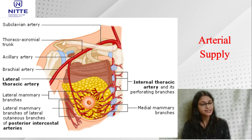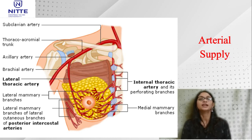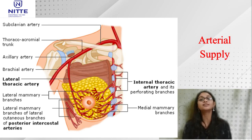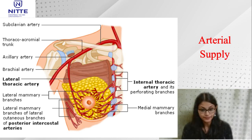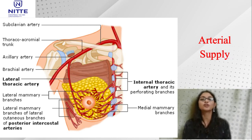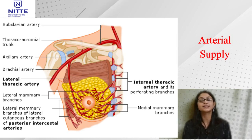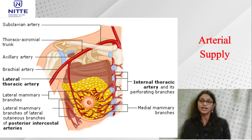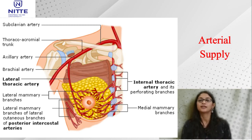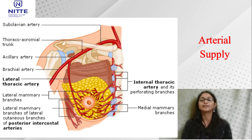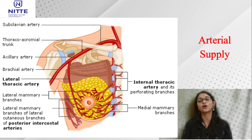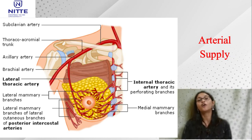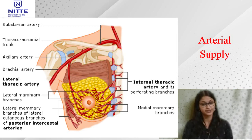The arterial supply of the mammary gland comes from perforating branches of the internal thoracic artery, which is a branch of the subclavian artery; the lateral thoracic, thoracoacromial, and superior thoracic branches of the axillary artery; and the lateral branches of the posterior intercostal arteries.